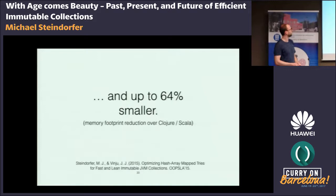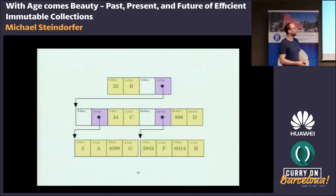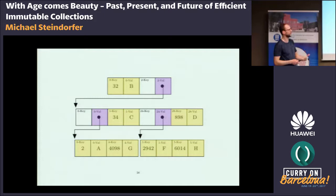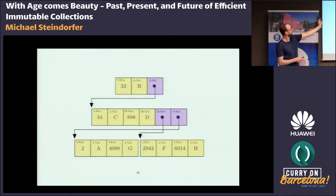Going from a set data structure to a map data structure — as implemented in Clojure — the convention is that key-value pairs are stored inline next to each other, or if a subtree is present, the key slot is left empty and the value slot is reused as a reference to subtrees. By applying the same trick of permuting elements, you can encode different-length slices in your array: all key-value pairs are of length two, whereas references to subnodes occupy only one reference.